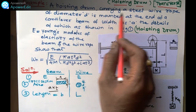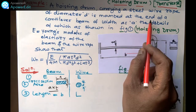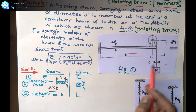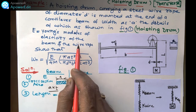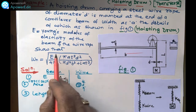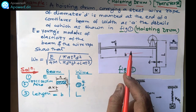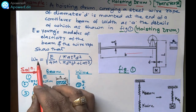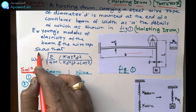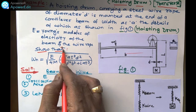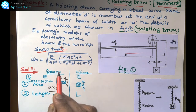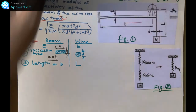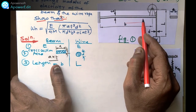The numerical: a hoisting drum carrying a steel wire rope of diameter d is mounted at the end of a cantilever beam of width a, as shown in the figure. E is the modulus of elasticity of the beam and wire rope — the same E is used for both. We have to prove that omega_n is equal to the given equation.